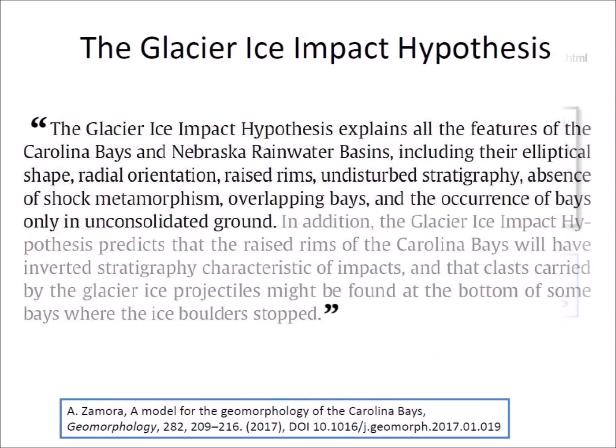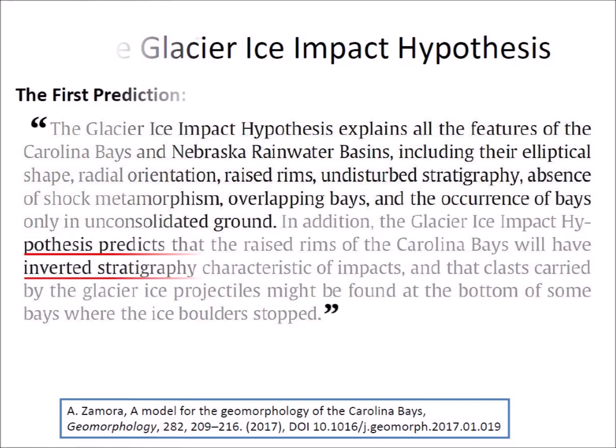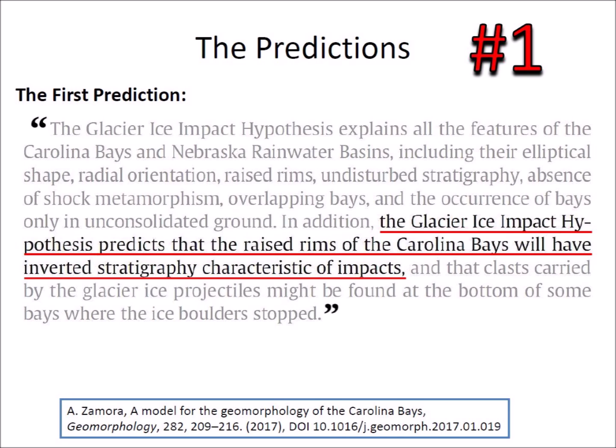The Glacier Ice Impact Hypothesis explains all the features of the Carolina Bays and Nebraska Rainwater Basins, including their elliptical shape, radial orientation, raised rims, undisturbed stratigraphy, absence of shock metamorphism, overlapping bays, and the occurrence of bays only on unconsolidated ground. The hypothesis also predicts that the raised rims of the Carolina Bays will have inverted stratigraphy characteristic of impacts — this is the first prediction.